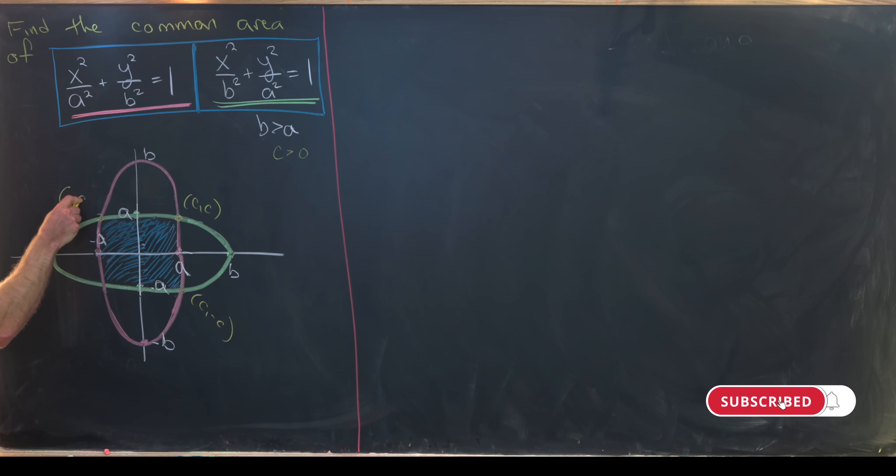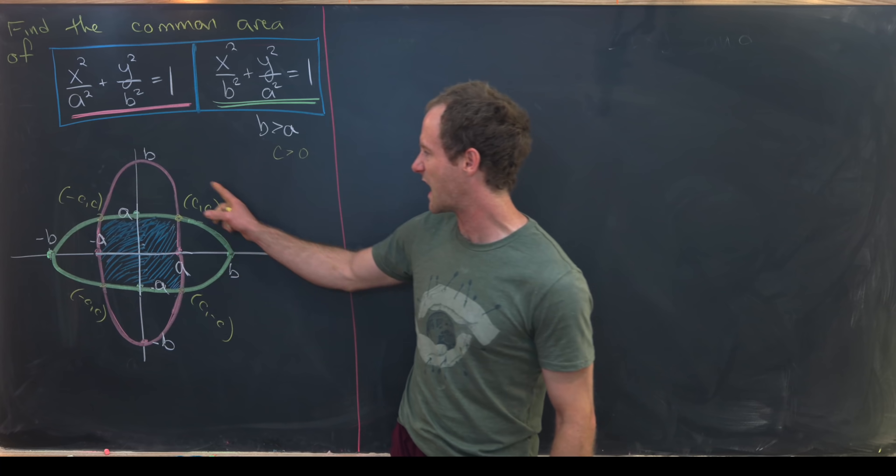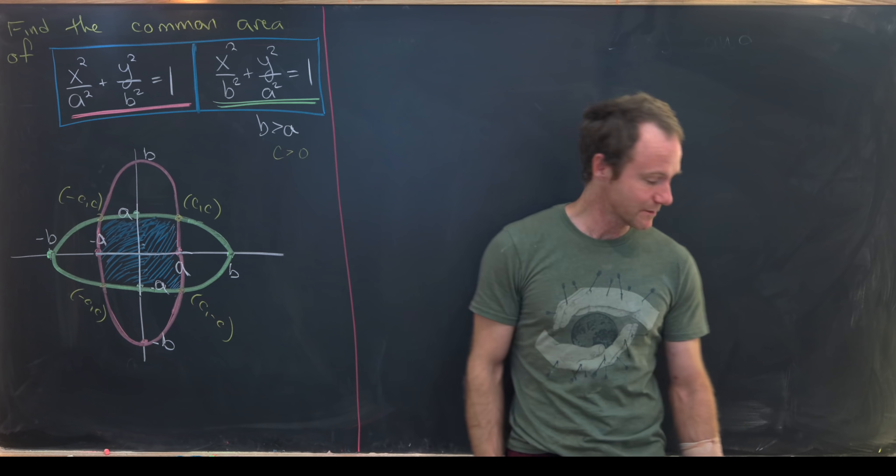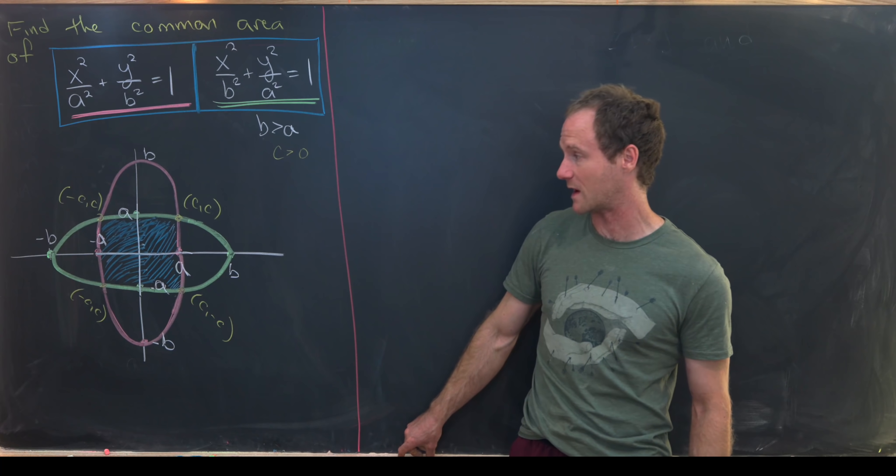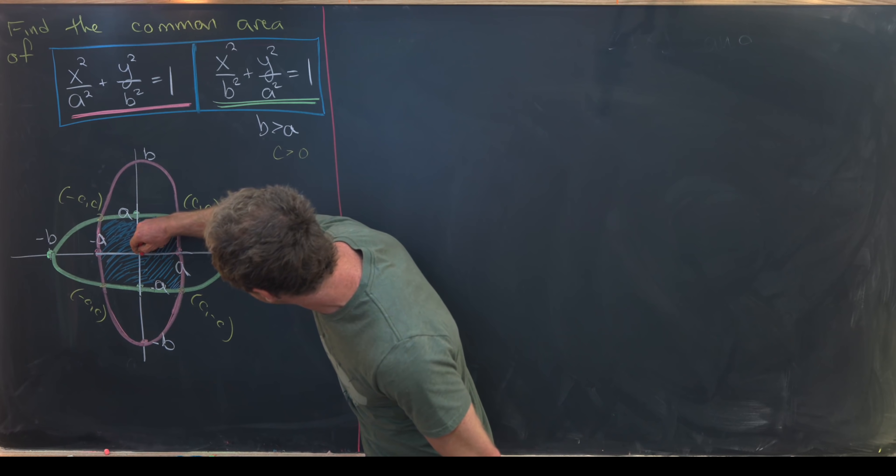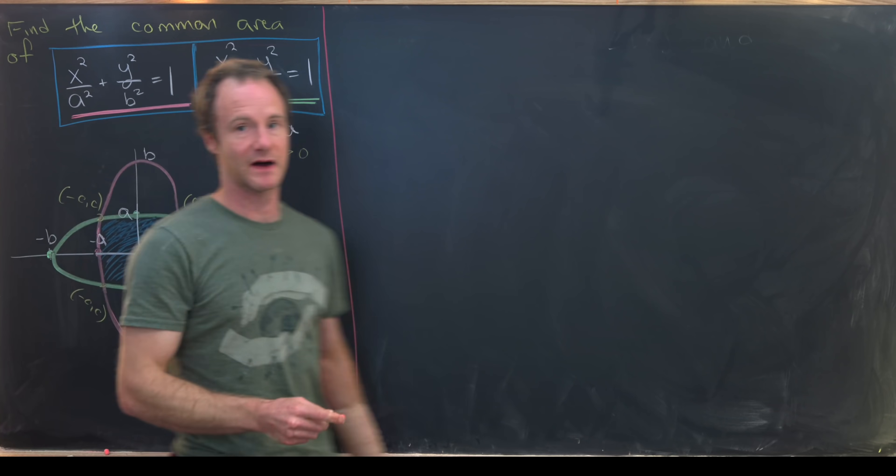Over here we have minus c comma c, and over here we have minus c comma minus c. The important thing to notice here is that the x coordinate and the y coordinate are the same up to sign. But that's actually a pretty powerful observation. That tells us that we can calculate this area by calculating only this area right here, which I'm shading in red, and then multiplying by eight.